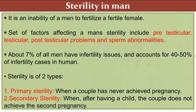Male sterility is the inability of a man to fertilize a fertile female. When a man is unable to fertilize a normal fertile female by natural means, he is considered sterile. Factors affecting sterility in men include pre-testicular, testicular, or post-testicular problems, or sperm abnormalities. About 7% of all men have infertility issues, accounting for 40–50% of infertility cases in humans.